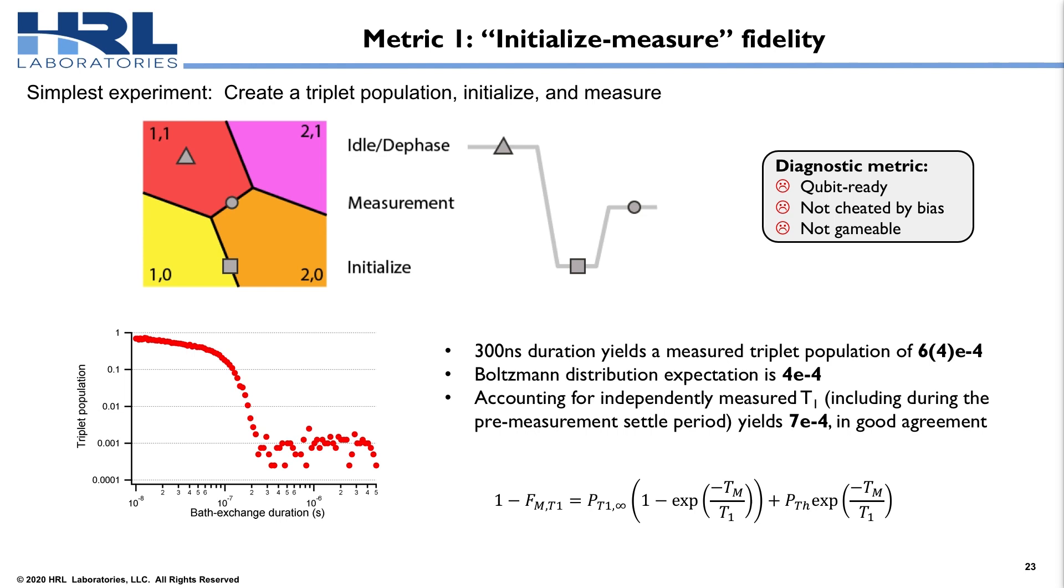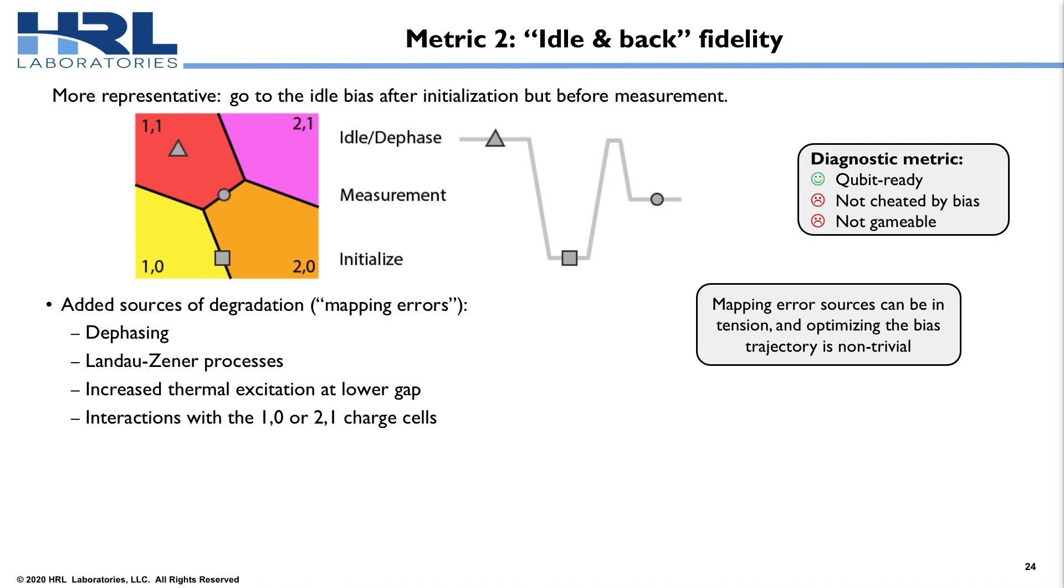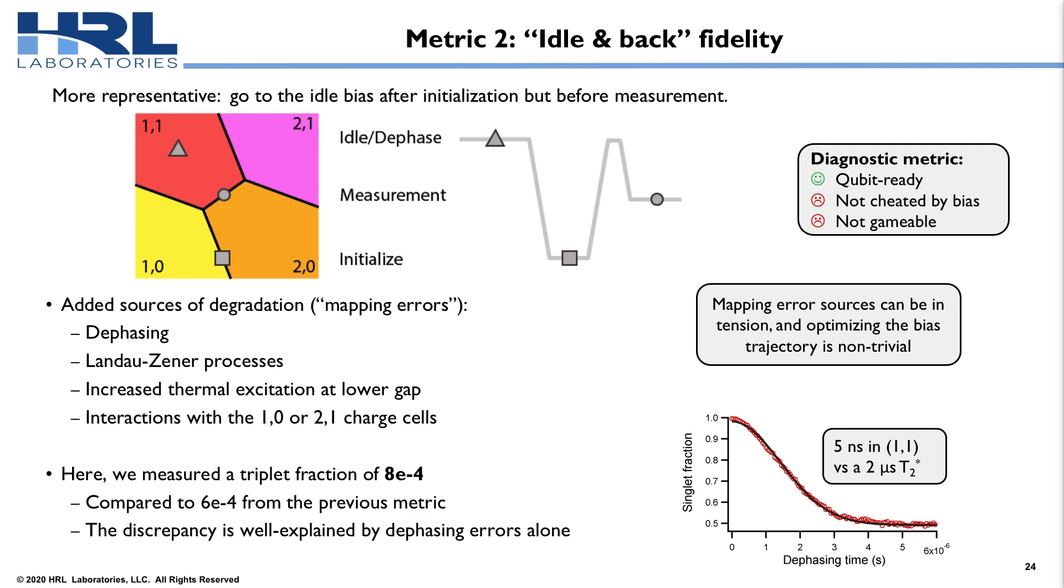So we can fix the first one of those by dephasing, going to our initialization, and then forcing us to go back to the center of the 1-1 bias before we do our measurement. That means we're ready to do qubit operations. And it's going to bring in some of those mapping errors that I talked about earlier. In particular, that's going to be things like dephasing and Landau-Zener. And sort of optimizing these parameters can be a little non-trivial, as they're often in tension with each other. So this is nice. I am qubit ready, though I haven't solved either of my other problems. In this data set, I now get a triplet fraction of 8E-4. So it was 6E-4 when I didn't go back to idle. I'm 8E-4 now. That discrepancy is explained really well just by T2 star and dephasing in my 1-1 state.